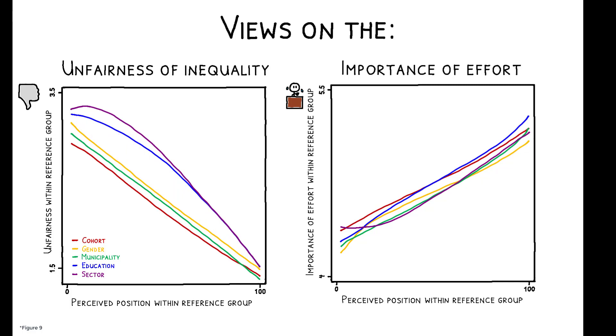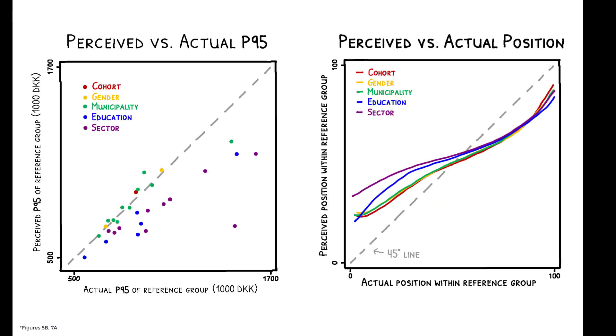One potential reason is that education and type of work are seen as key determinants of income. Yet, as seen before, these are also the reference groups in which misperceptions of inequality are largest. As such, people are less informed about inequality and social position in the precise contexts where it matters most to them.